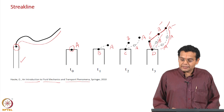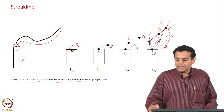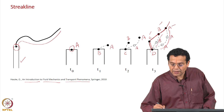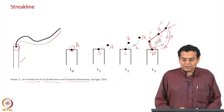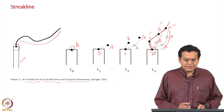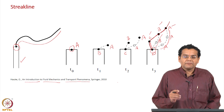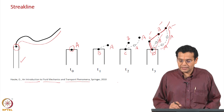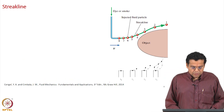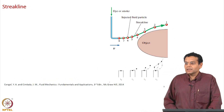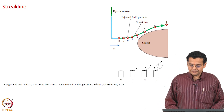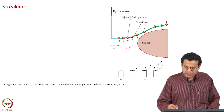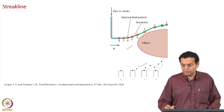Another way of putting it: the streak line tells you the locus of all fluid particles at a particular time — it is at a particular time, but it has a time history associated with it, and all these particles have passed through this particular point. It is a very good representation with which you can physically understand streak lines very clearly. Remember, when we measure experimentally by injecting a dye or smoke, we are measuring streak lines. The picture shown is the usual representation for a streak line.